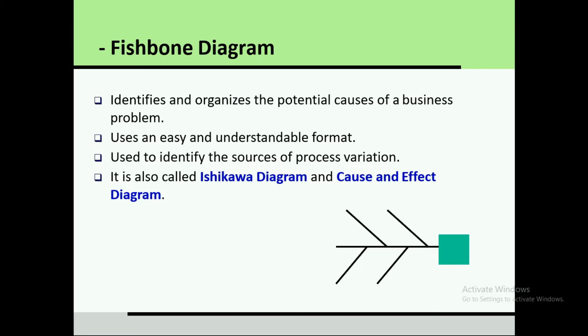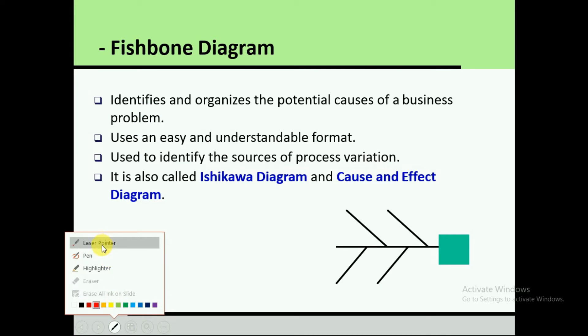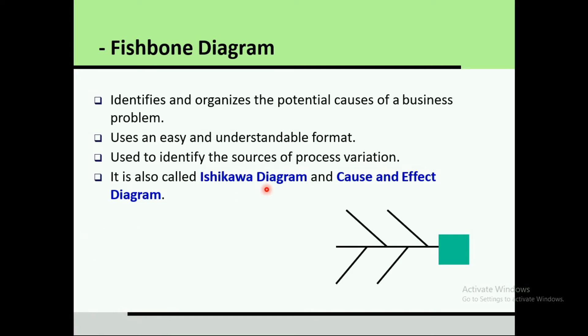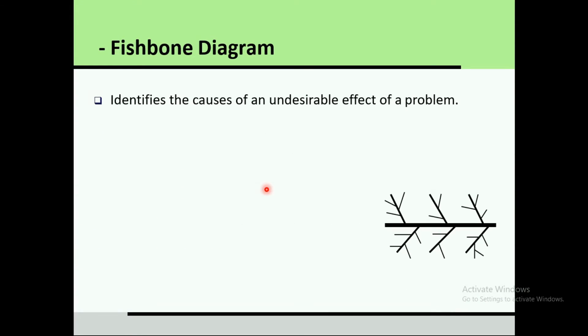It is also called the Ishikawa diagram because it was first introduced by Ishikawa, and it is called the cause-and-effect diagram because it identifies the root cause of any problem. The structure of the diagram resembles a fish skeleton. These are the main names: fishbone diagram, Ishikawa diagram, and cause-and-effect diagram. It identifies the cause of any undesirable effect of a problem.